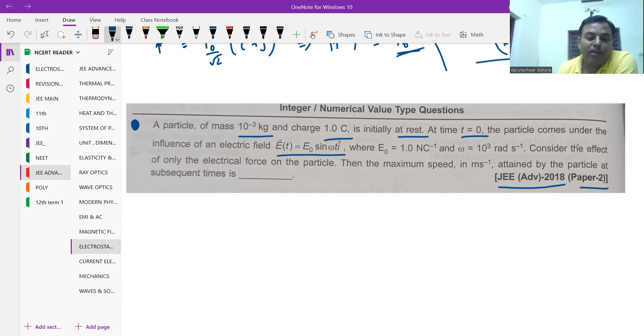In this question, we have some data given. Mass is 10⁻³ kg, the charge of the particle is 1 coulomb, and initially at t = 0, the particle is at rest.